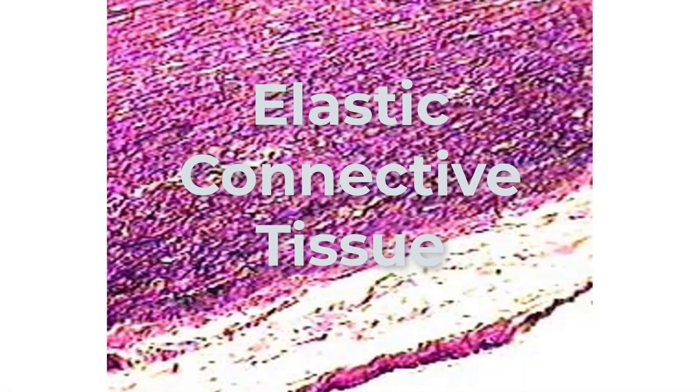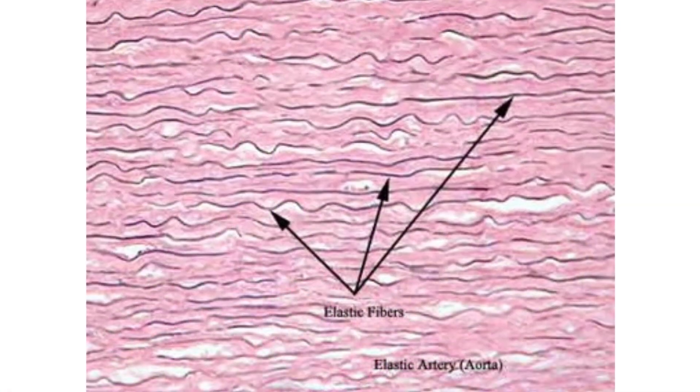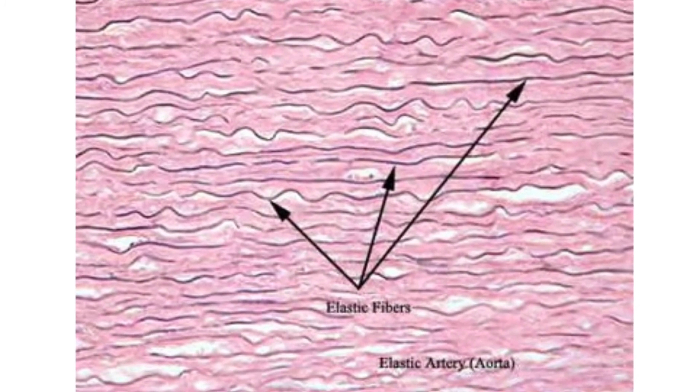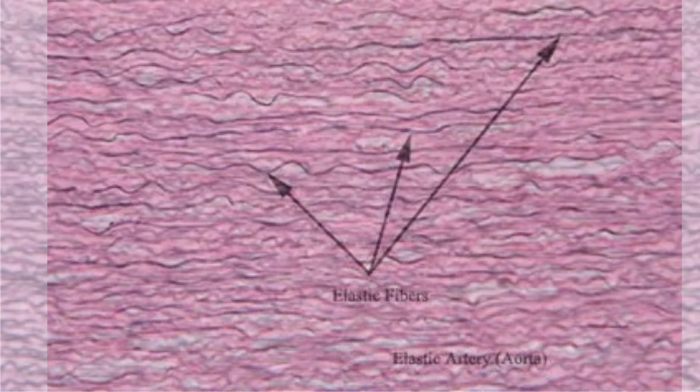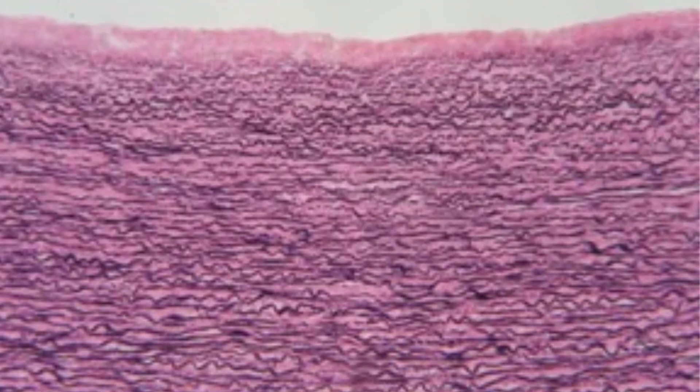Elastic connective tissue contains a lot of elastin fibers — the black wavy lines seen in the image. When an organ containing these fibers is stretched, the elastin fibers recoil or go back to their original length and pull the organ back into shape. True elastic connective tissue is very rare, but present in relatively high concentrations in some organs, including the largest arteries in the body.